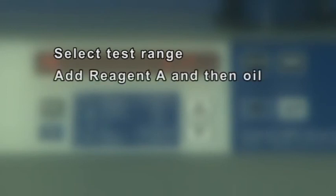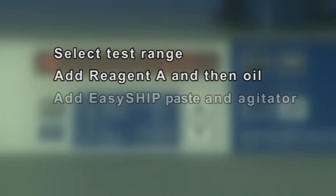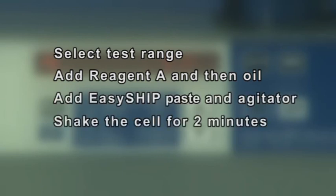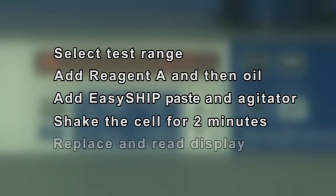To summarize: select test range, add reagent A and then oil, add Easy Ship paste and agitator, shake the cell for two minutes, replace and read display.